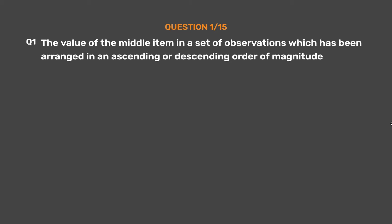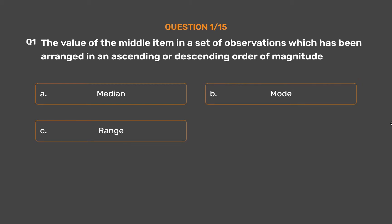Question number 1. The value of the middle item in a set of observations which has been arranged in an ascending or descending order of magnitude. Option A: Median. Option B: Mode. Option C: Range. Option D: Mean. The correct answer is Option A: Median.